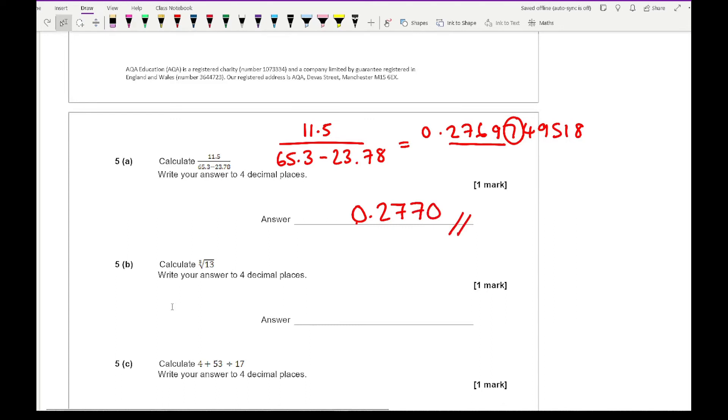Moving on to question 5B. It says the cube root of 13. If I enter that on the calculator, it gives me 2.351334688. Rounding this to 4 decimal places gives 2.3513.